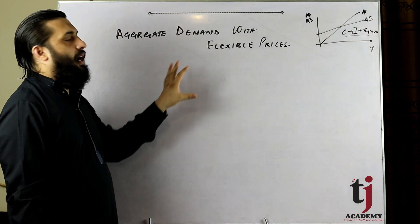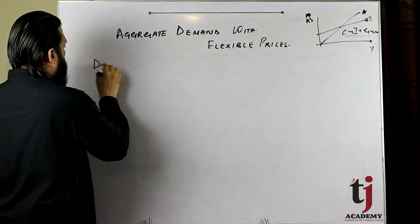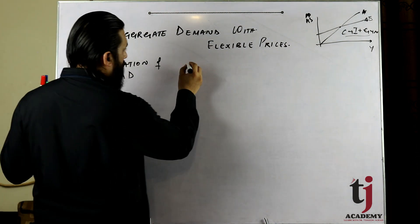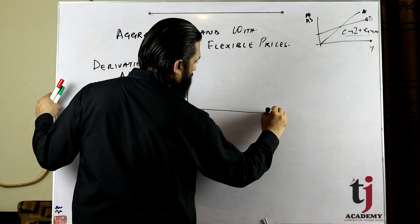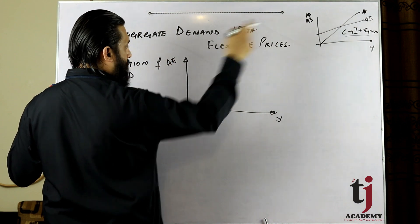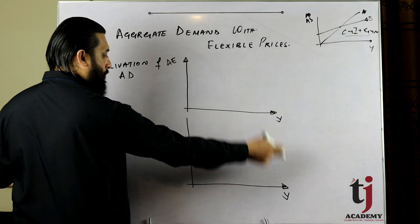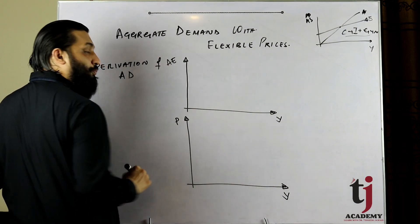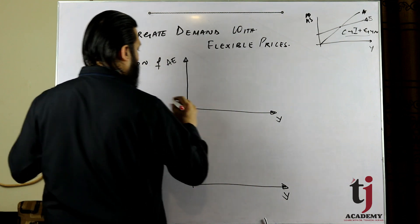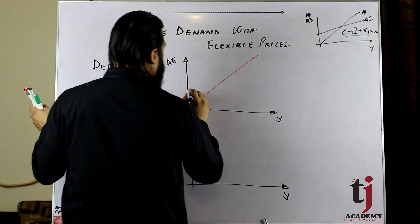Aaj jo hum model discuss karne ja rahe hain woh aggregate demand with flexible prices hai. To sabse pehle hum dekhenge derivation of aggregate demand. You have to pass income on x-axis and aggregate expenditure. Usi demand ko expenditure form mein le raha hoon. And here we have aggregate output and general price level.